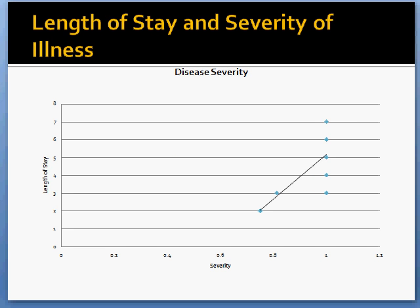Finally, I plotted the length of stay and the severity of illness on a scatterplot. When a trend line is added, you can see that there is a definite relationship between severity of illness and the length of stay in a hospital. The more severe the case, the longer the length of stay.